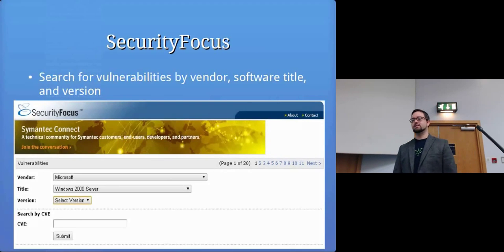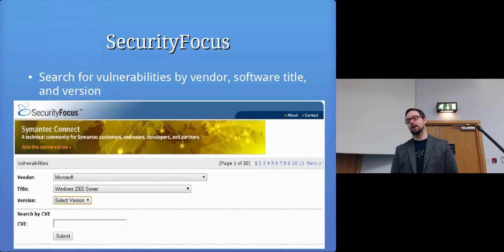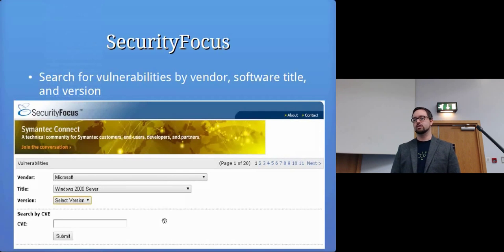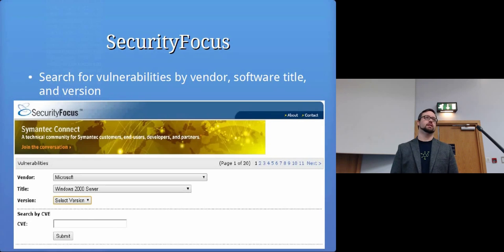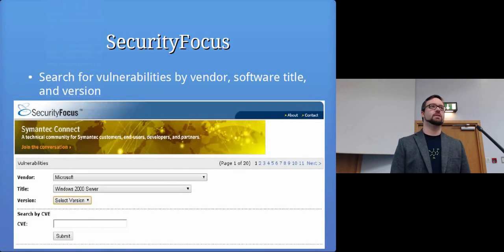SecurityFocus looks a bit like this — you can do a vulnerability search by vendor, software title, and version. You basically select who the vendor is, the title of the software you're trying to attack, enter the version if you know it, and click submit. Then there'll be a long list of all the vulnerabilities that the website includes in its database for that specific software.